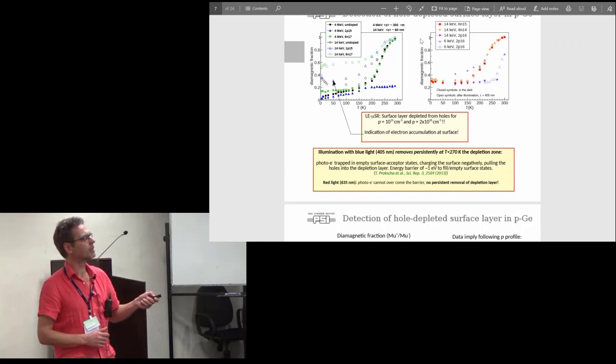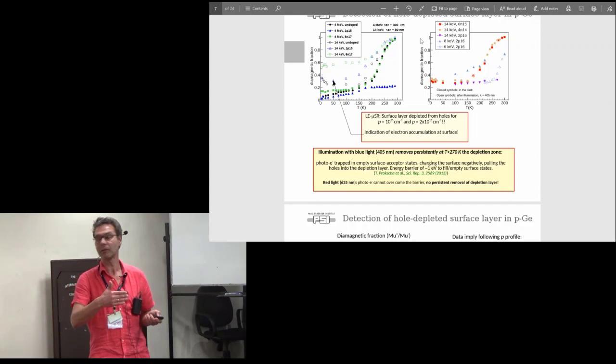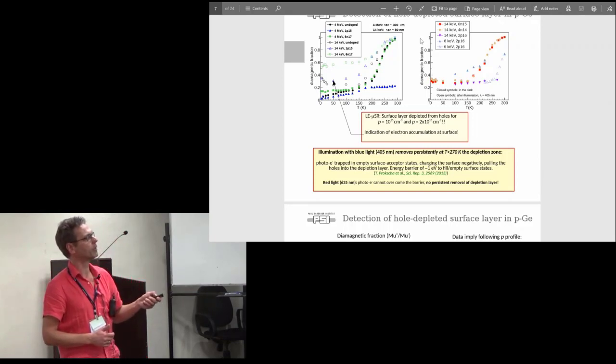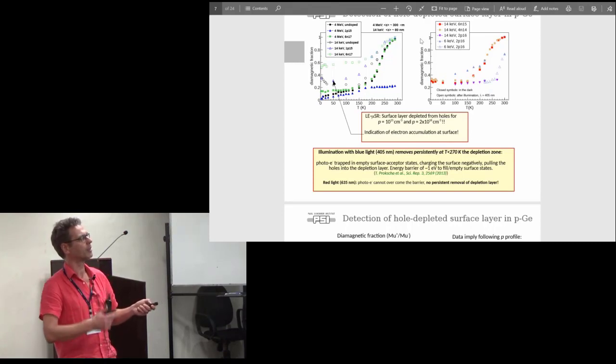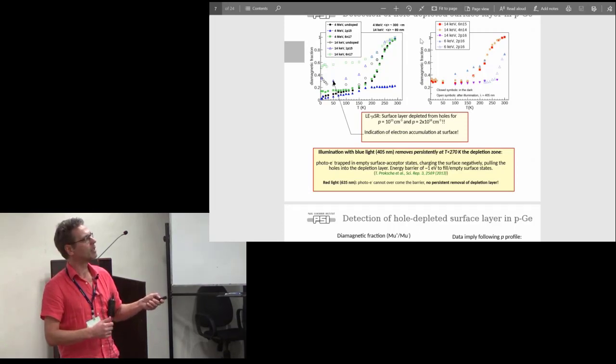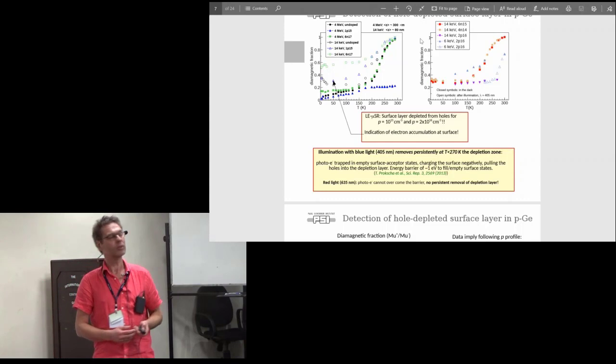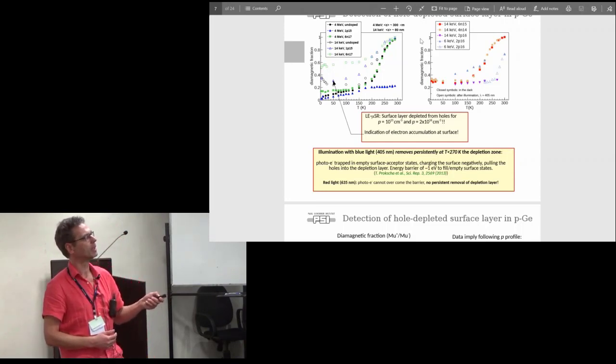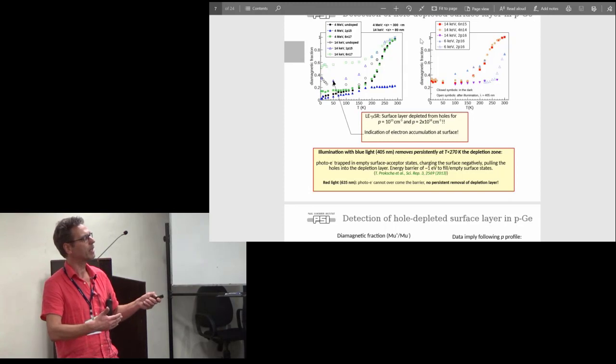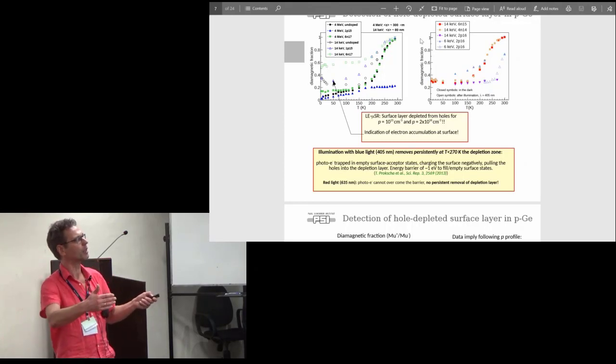Now we see here the open symbol, this is the same sample as here but measuring 80 nanometers from the surface away. It looks completely different. First we have a much higher diamagnetic fraction, the fraction of muons processing at the Larmor frequency, which is an indication that we have electron accumulation at the surface. We see still this increase due to the muonium minus formation. So there are no holes in the first 80 nanometers. It's completely hole depleted and there's indication that we have electron accumulation and hole depletion. Also in the n-type sample we see a much higher diamagnetic fraction, indicating maybe a 10 times higher electron concentration than what the bulk doping level is.